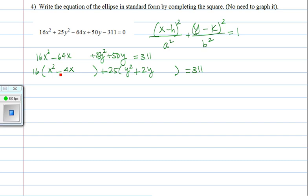To complete the square, you take b — the coefficient of x in each of these — divide it by 2, and square it. So negative 4 divided by 2 is negative 2, and negative 2 squared is positive 4. Same thing here: take 2 divided by 2, that's 1, square 1, and that's 1.